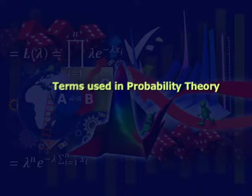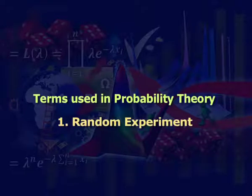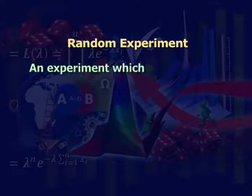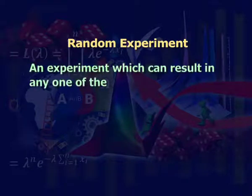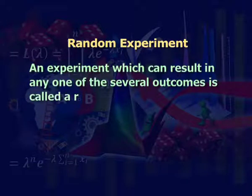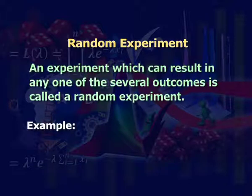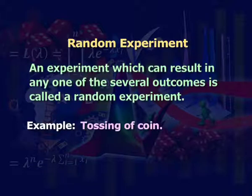Let us see the terms and examples used in probability theory. Number one: random experiment. An experiment which can result in any one of several outcomes is called a random experiment. For example, tossing of a coin.